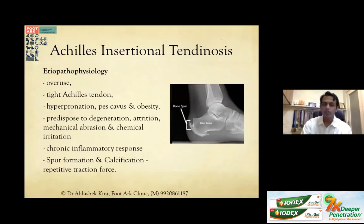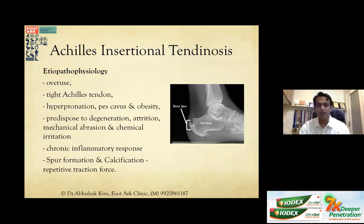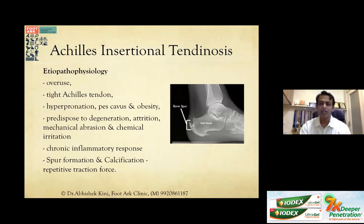The etiopathology is primarily overuse: a tight Achilles tendon, hyperpronation, foot deformity, and obesity all predispose to degeneration, attrition, and mechanical abrasion at the bone-tendon interface, causing chemical irritation. A chronic inflammatory response results in spur formation and calcification due to repeated traction. Importantly, these retrocalcaneal heel spurs are pathologic — unlike the infracalcaneal heel spurs, which are physiologic.